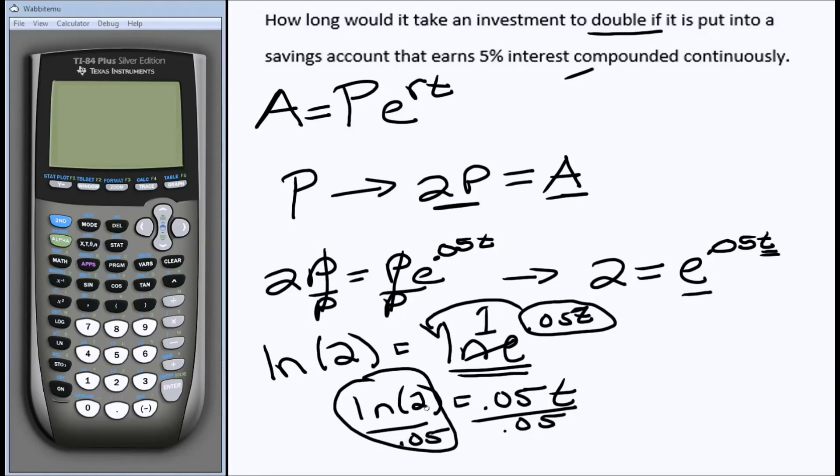Now, generally, we want to know what the actual decimal value of this is. So let's go to our calculator. First thing we need to do is put in the ln of 2 divided by .05. And that is a t value where t is equal to 13.86 years.